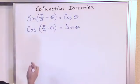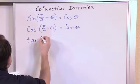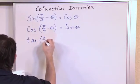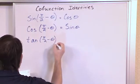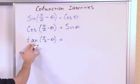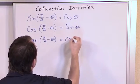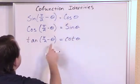Now, there's one more I'm going to present to you that you probably won't use as much. The tangent of pi over 2 minus theta is equal to, if you had to guess, what do you think the cofunction of the tangent function would be? Well, you'd probably guess it's the cotangent function.